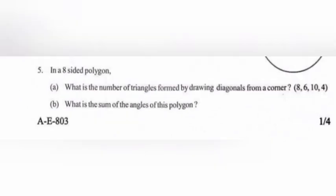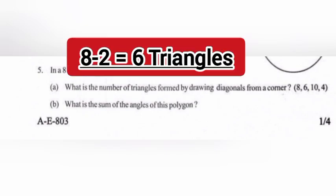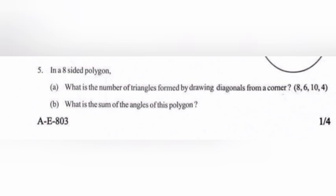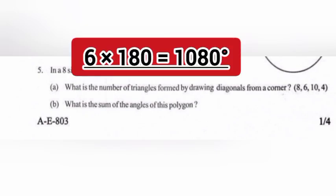5. In an eight-sided polygon, A. What is the number of triangles formed by drawing diagonals from a corner? Answer: 8 minus 2 equals 6 triangles. B. What is the sum of the angles of this polygon? Answer: 6 times 180 equals 1080 degrees.